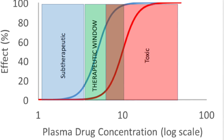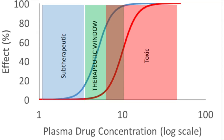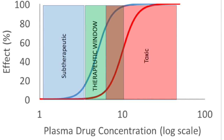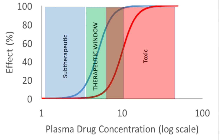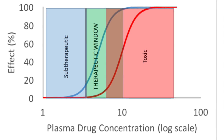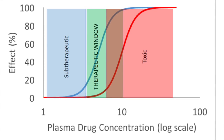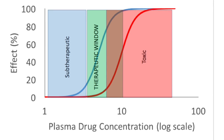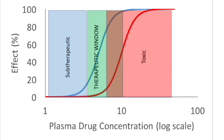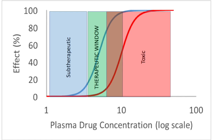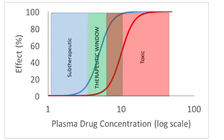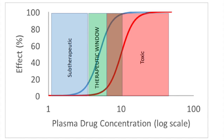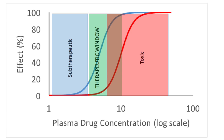Ideally, there is a big difference between concentrations that cause beneficial effects and those that are toxic. However, this is not always the case for all drugs. In some drugs, the therapeutic window is very narrow and can even overlap with toxic concentrations. Such drugs are typically only used in cases of severe illness where the high risk is balanced by significant benefits.